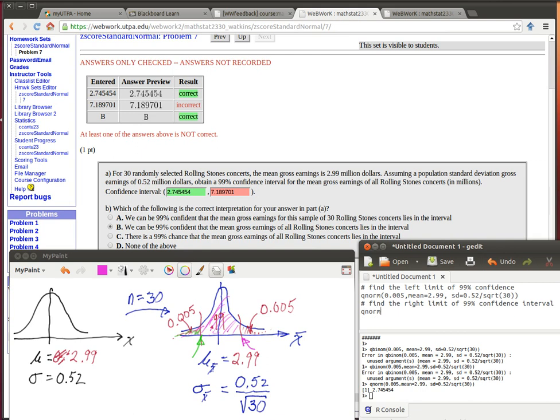So I'm going to have to look at a QNorm. Now the area to the left of this quantile is going to be the 0.99 plus the 0.005. Do you see where that is in the picture? Look at the picture. The QNorm tells you the quantile when you know the area to the left of that quantile.